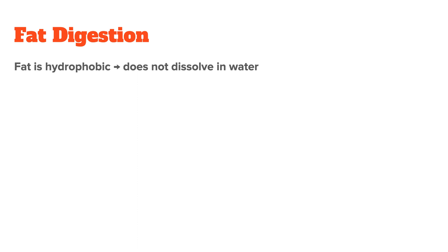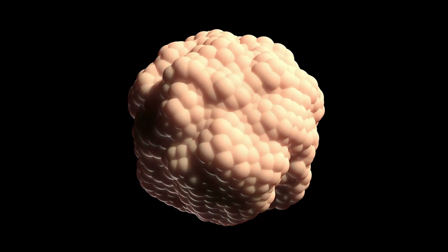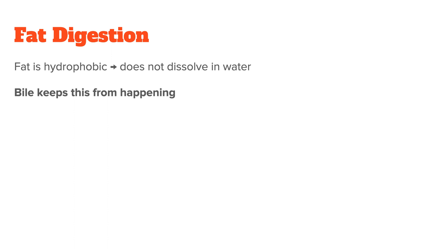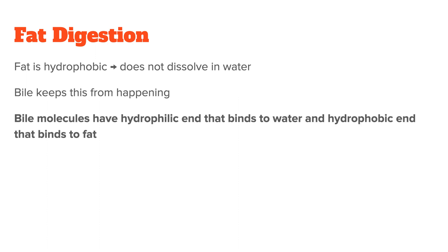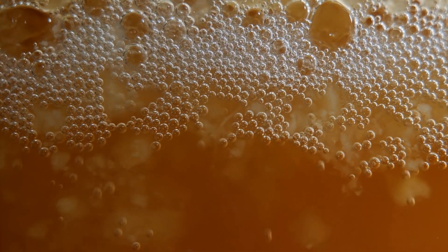Lastly, we have fat, which is a tricky nutrient to absorb. That's because fat is hydrophobic — meaning it doesn't dissolve in water — so your body can't digest it as it does other nutrients; fat molecules would simply clump together and form one big ball. Bile, which is made by the liver and sent to the small intestine, keeps this from happening. Because bile molecules have a hydrophilic end that binds to water and a hydrophobic end that binds to fat, it hinders the fat from sticking together. This creates a bile-fat mix where lipase enzymes do their work, breaking down the fat into fatty acids and glycerol. The fat-soluble vitamins A, D, E, and K are absorbed using the same mechanism — they are incorporated into the bile-fat mix and absorbed along with it.